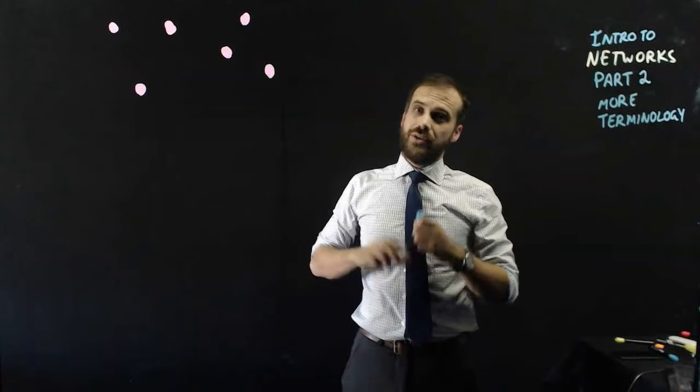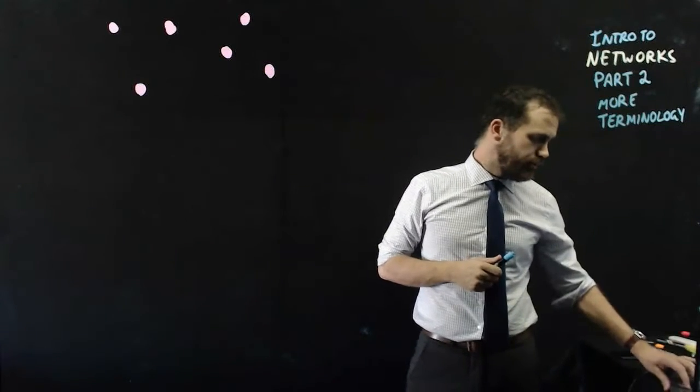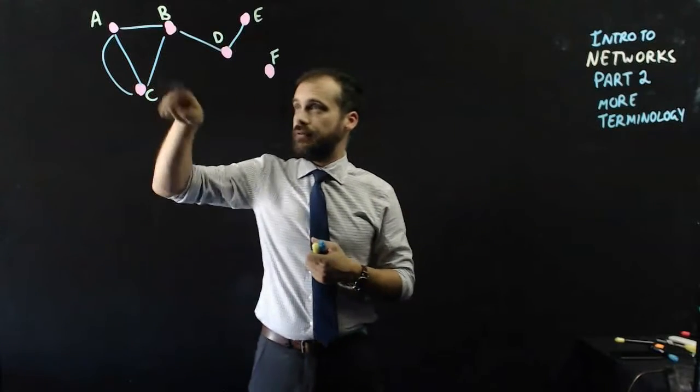So here we have six vertices that have not yet been connected. Let's connect them up into a network. Okay, here we have our network. You can see we have vertices and we have edges.